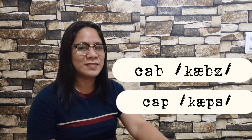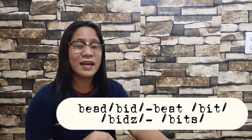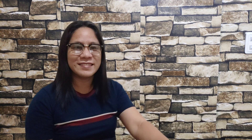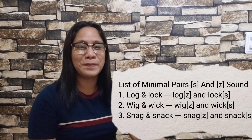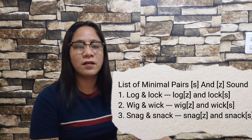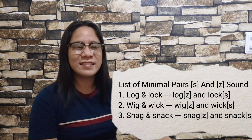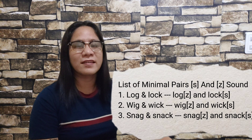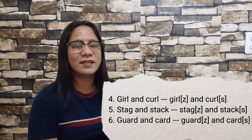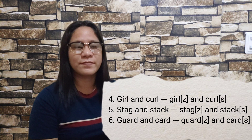Therefore, examples include: Cab/Cabs, Cap/Caps, Bid/Bids, Bit/Bits, Laugh/Laughs, Love/Loves. Here are more examples of minimal pairs with /s/ and /z/ sounds: Log/Logs, Lock/Lots, Wig/Wigs, Wick/Wicks, Snag/Snags, Snack/Snacks, Girl/Girls, Curl/Curls, Stag/Stags, Stack/Stacks.